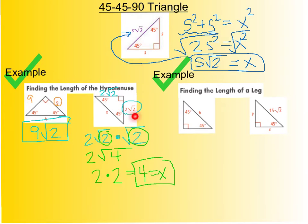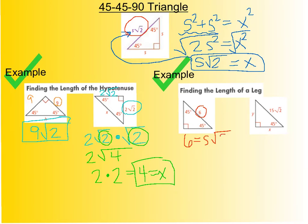You can use your calculator in class and on the end-of-course exam, which is helpful. The next two examples work backwards — finding the length of a leg from the hypotenuse. The easiest approach is to recognize that the hypotenuse equals S radical 2. So if the hypotenuse is 6, I write 6 equals S radical 2, and divide both sides by radical 2 to get S equals 6 divided by radical 2.